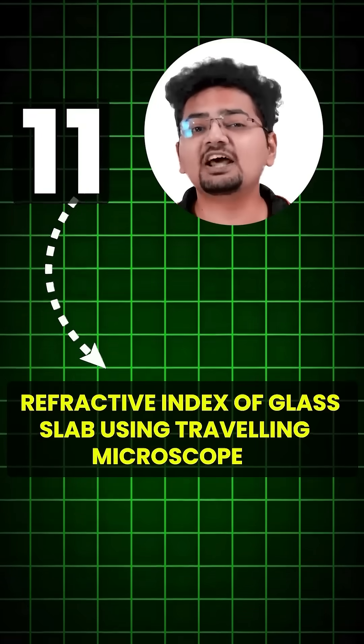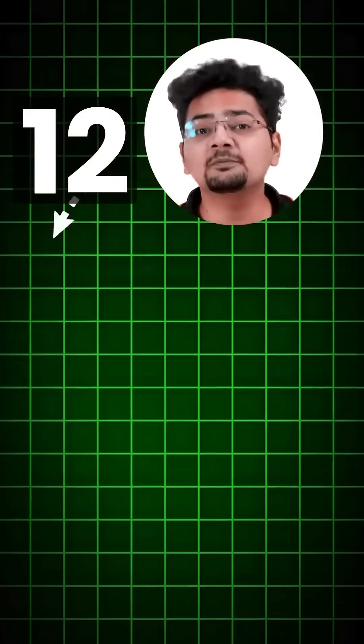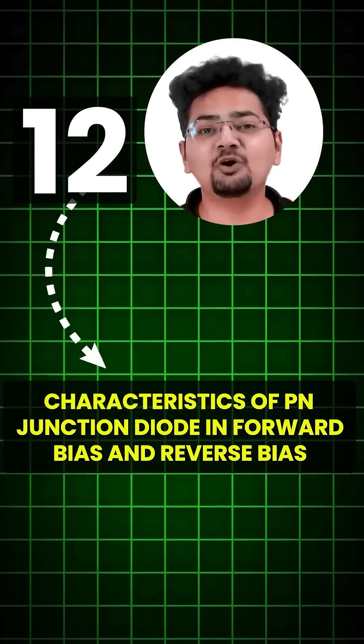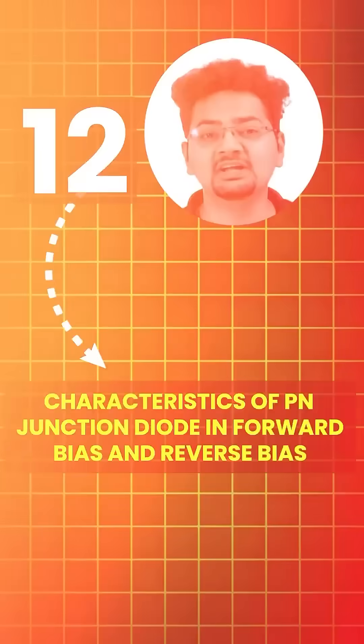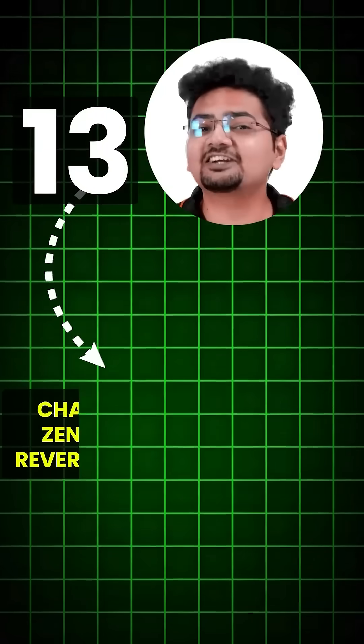Eleventh, Refractive index of glass slab using traveling microscope. Twelfth, Characteristic curve of P-N junction diode in forward and reverse bias.